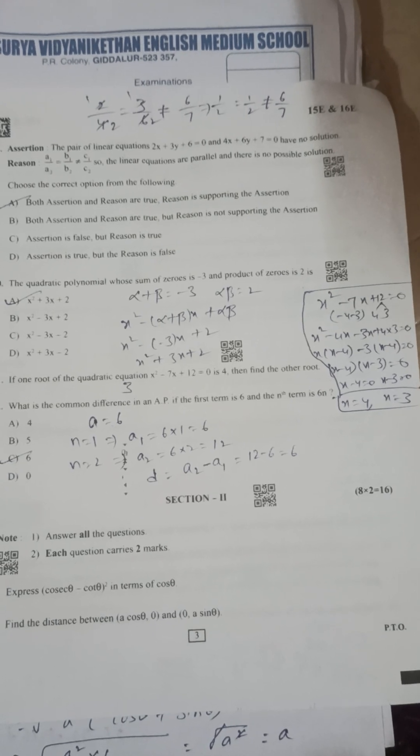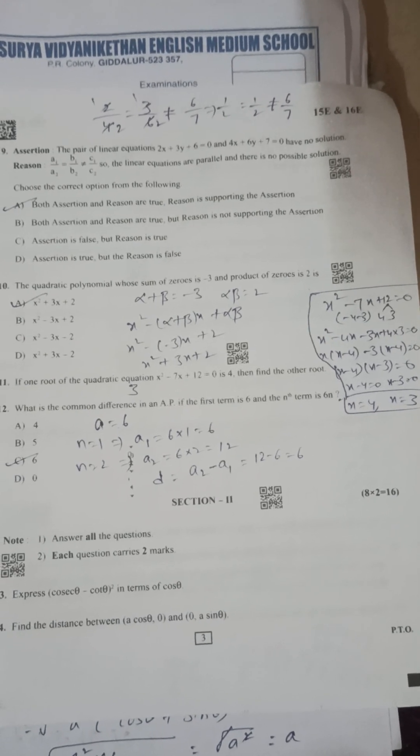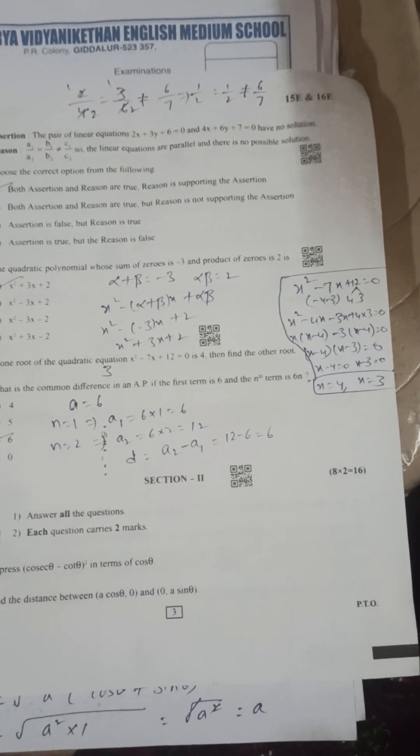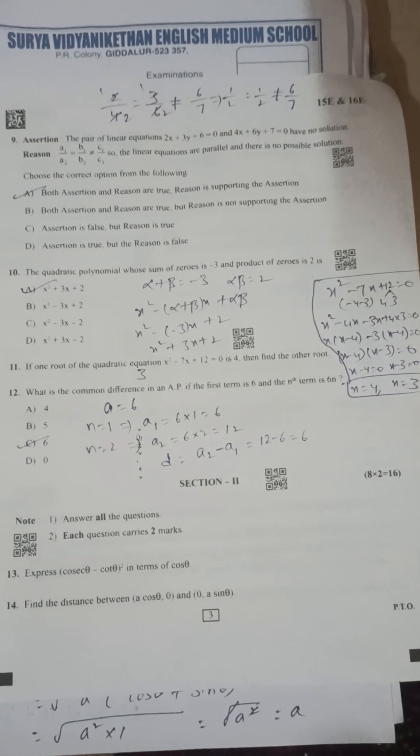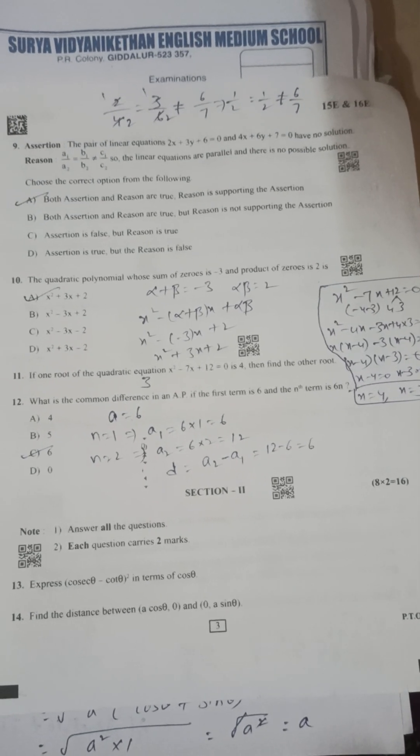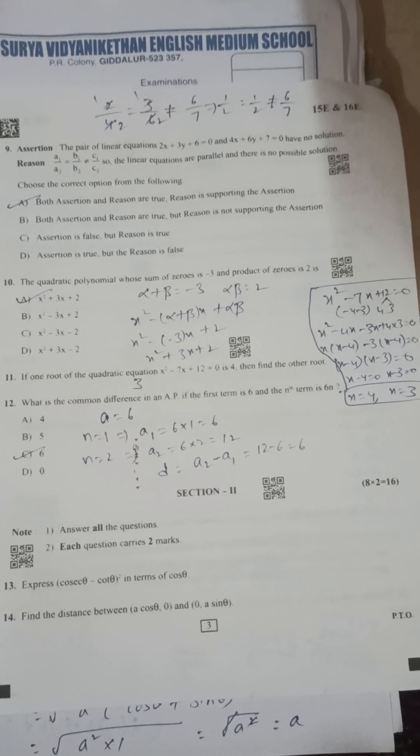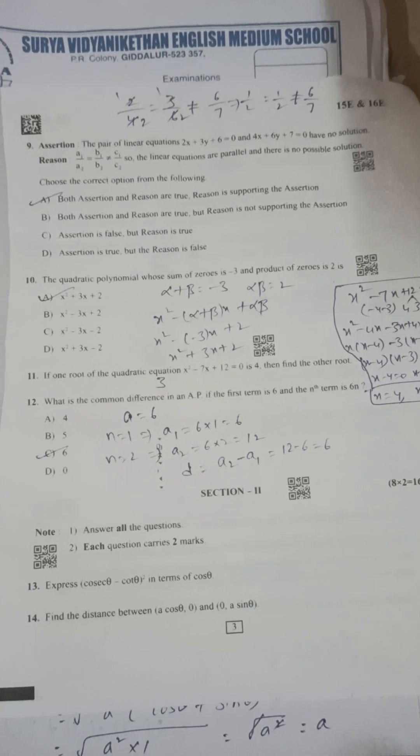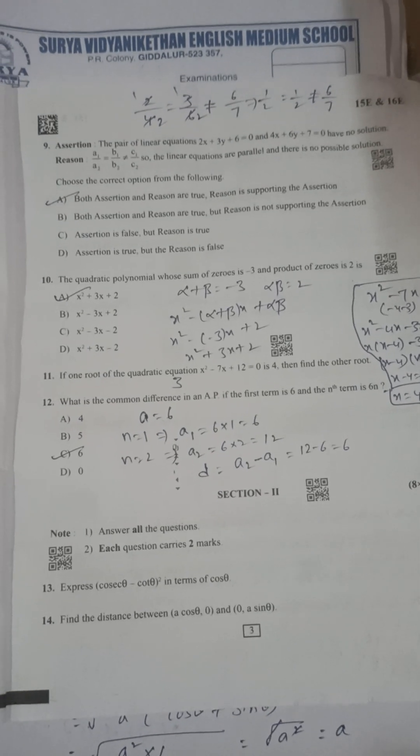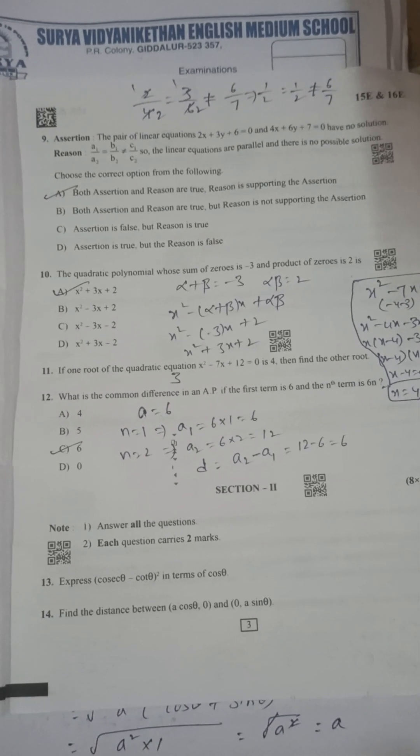Next, if one root of the quadratic equation x square minus 7x plus 12 is equal to 0 is 4, then find the other root. So x value is 3. Next 12th one: what is the common difference in an AP if the first term is 6 and the nth term is 6n? The option is C.